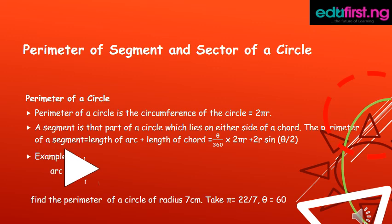A segment is part of a circle which lies on either side of a chord. The perimeter of a segment is equal to length of an arc plus length of a chord, equal to θ/360 × 2πr + 2r sin(θ/2).